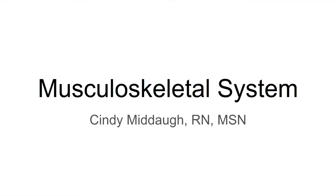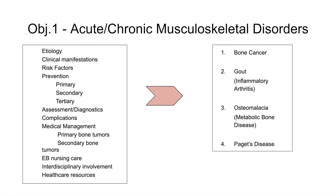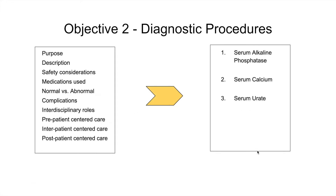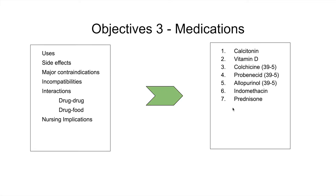Hey nursing students, Ms. Midoff here to talk to you about the musculoskeletal system. We're going to be talking about various objectives: bone cancer, gout, osteomalacia, and Paget's disease, and all the different factors related to these four disease processes. Then we'll cover diagnostic procedures — serum alkaline phosphatase, serum calcium, serum urate — and seven medications of the musculoskeletal system.